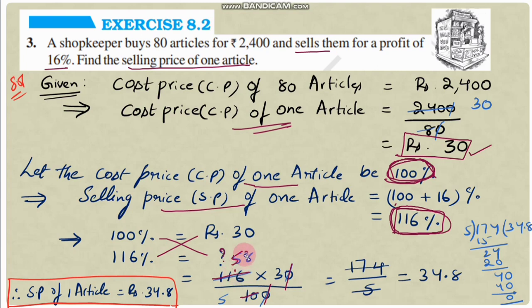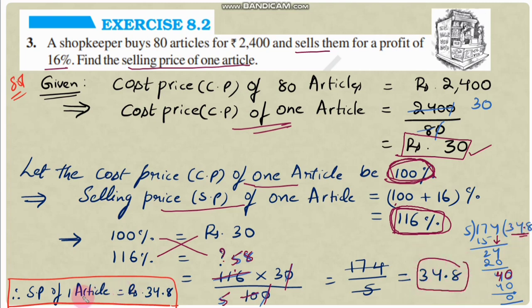Calculating 116 into 30 divided by 100: after cancelling zeros and simplifying, we get 58 into 3 equals 174, divided by 5. Dividing 174 by 5 gives 34.8. So the selling price of one article is rupees 34.8.